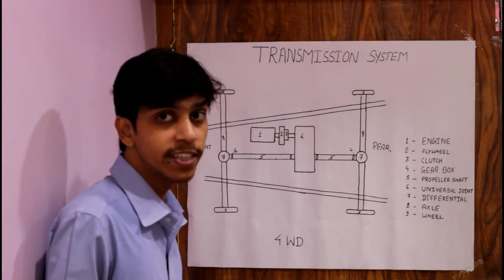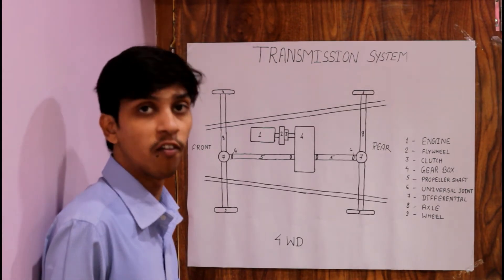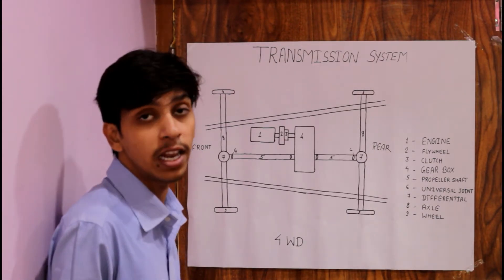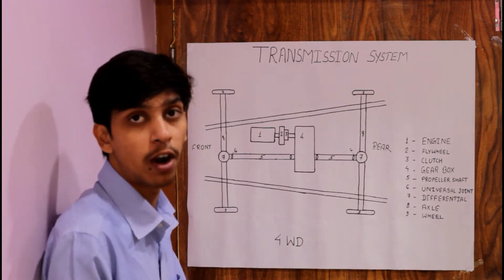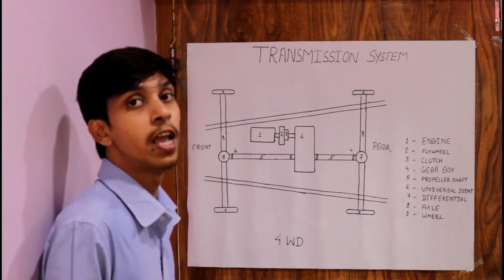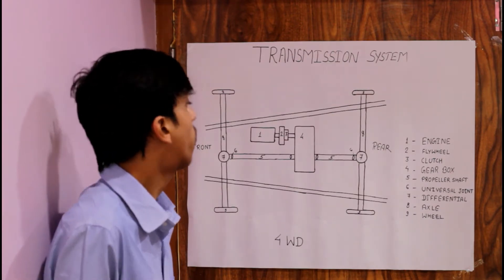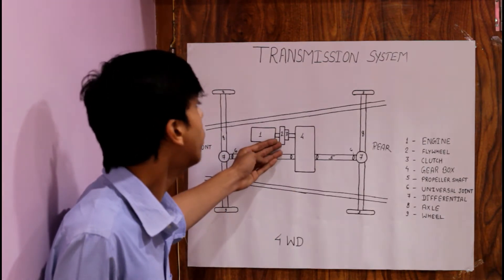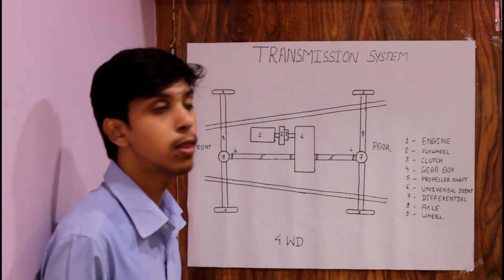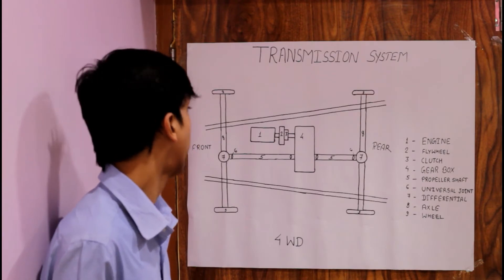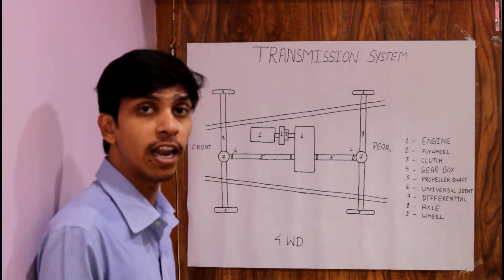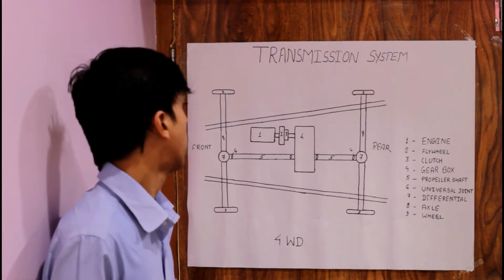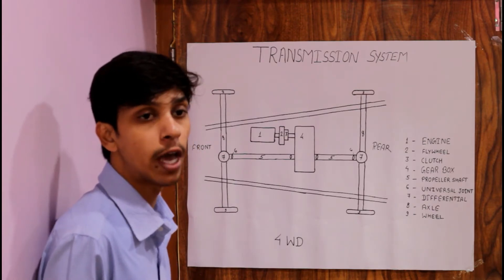These are the basic parts of the transmission system. First, the engine is the power plant of a vehicle, through which the chemical energy of fuel is converted into mechanical energy, and power is transmitted further in the system. After the engine, the flywheel is situated. A flywheel is a rotating mechanical device which stores the energy produced by the engine and releases it as per the requirement.